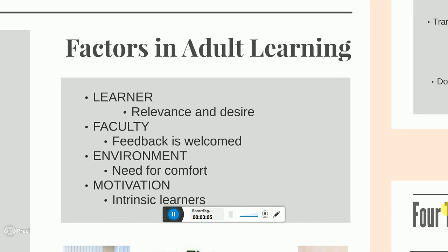It is understood that people have different strategies for learning, but researchers have proven four main factors that affect the learning of an adult student. Adult learners use previous life experiences to ensure that information being taught is relevant to the individual's own life. This will give the adult learner a desire to further their knowledge about the topic.